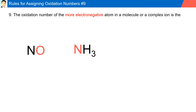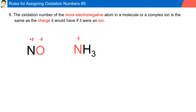Rule number nine: the oxidation number of the more electronegative atom in a molecule or a complex ion is the same as its charge as if it were an ion. For example, in NO, oxygen is more electronegative, so it has a minus two charge, resulting in nitrogen having a plus two charge. In NH3, nitrogen is more electronegative than hydrogen, so it has a minus three charge, meaning each hydrogen has a plus one oxidation number.